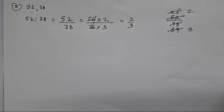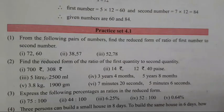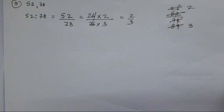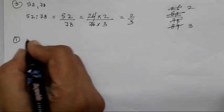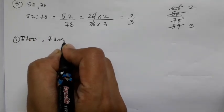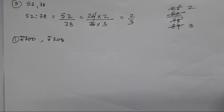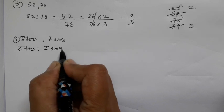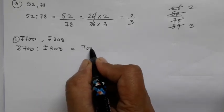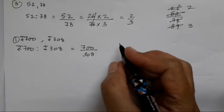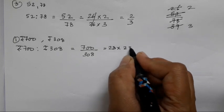The next question is: find the reduced form of the ratio of the first quantity to the second quantity. Here again you have to do some conversions. First: rupees 700 and rupees 308 — same method only rupees have been added to it. Write it as 700 upon 308 rupees. You don't have to write the units again. Now 28 twenty-fives are 700 and 28 elevens are 308.